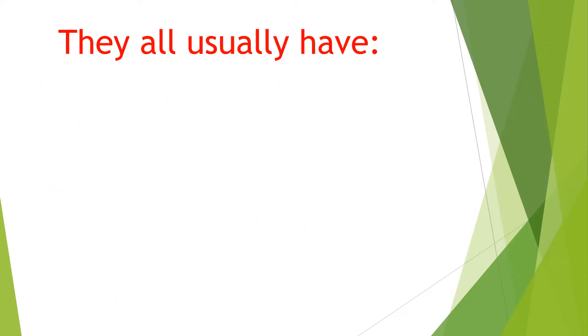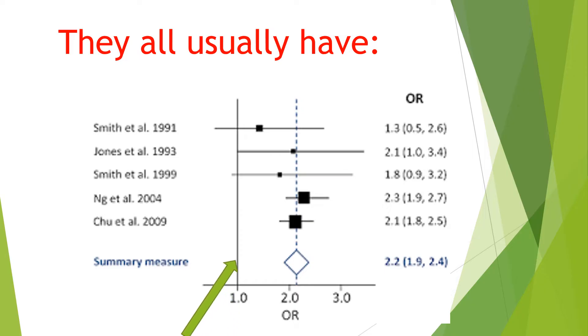Not all forest plots look the same, but they all have a vertical line. This is the line of no effect. It is placed at the value where there is no association between an exposure and an outcome, or no difference between the two interventions. For relative risk ratios and odds ratios, as in this one, the line is at 1. For absolute statistics, like absolute risk or standard mean difference, the line is at 0.